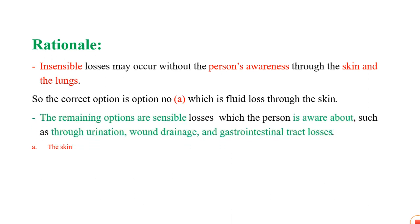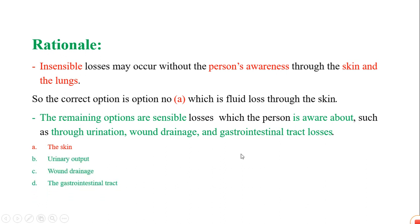The remaining options — urinary output, wound drainage, and gastrointestinal tract losses — are all sensible losses, meaning the person is aware of them. For example, through urination and wound drainage, the person can measure and perceive the fluid loss.